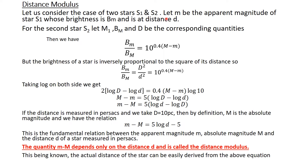For star S1: m is the apparent magnitude, B_m is the brightness, and d is its distance. Similarly for star S2, M is the apparent magnitude, B_M is the brightness, and capital D are the corresponding quantities.